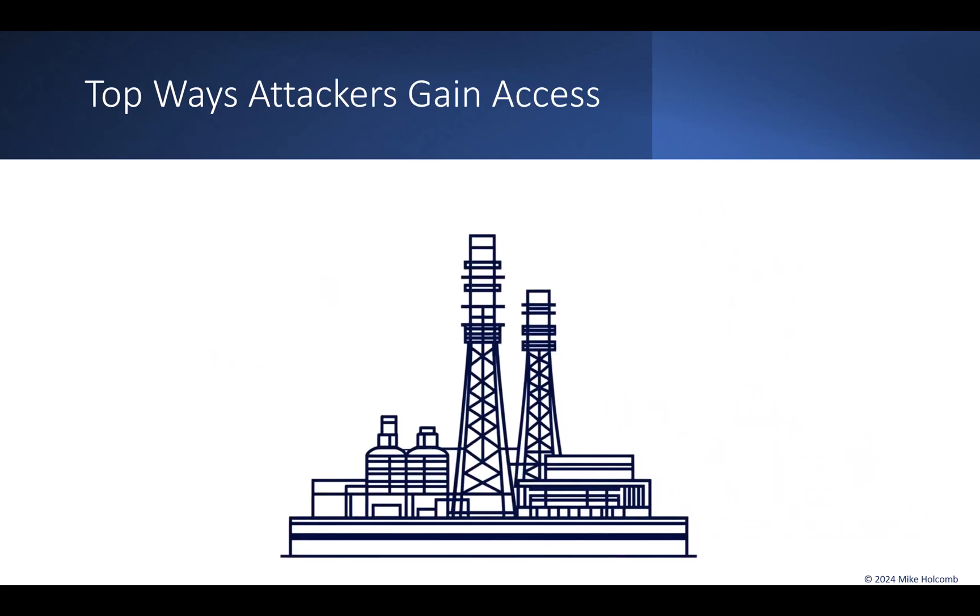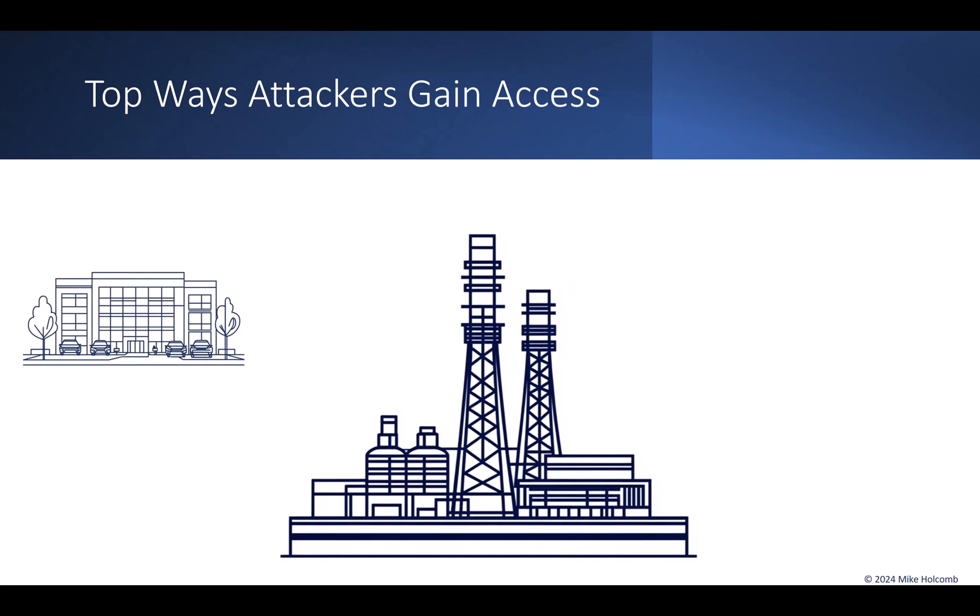If you have a power plant, how are attackers going to break into that ICS/OT network used to run it? The number one way is attackers will come in through your back office or IT. In control system environments, there's connectivity with the IT network — the back office is where data from the power plant is sent so the business can access information like how much electricity was generated, how much natural gas was used, and so on. The business needs all that information to function and make sure everyone gets paid.